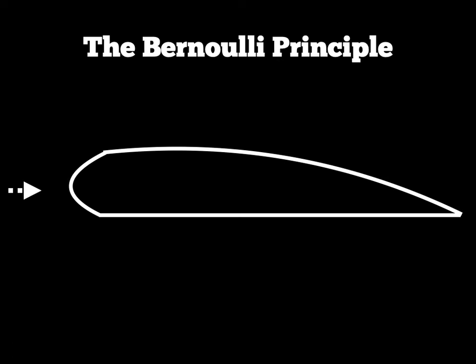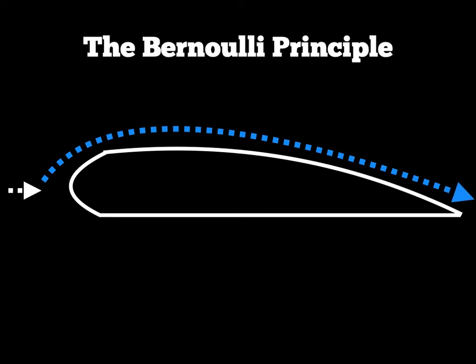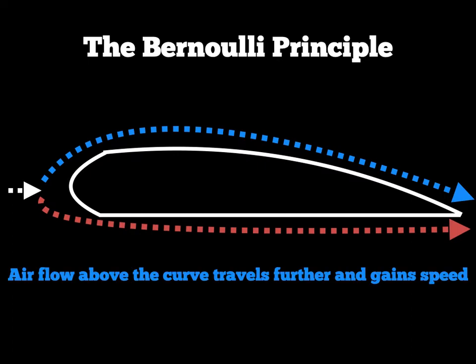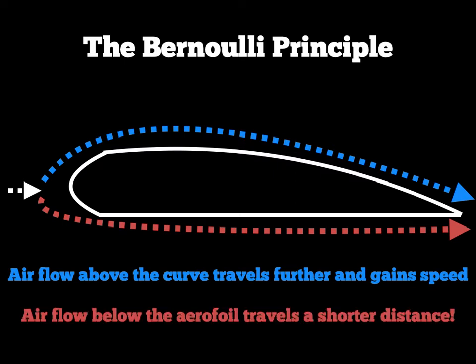As the air approaches the aerofoil, the air along the top has a longer distance to travel, and so it can generate more speed or air velocity — the velocity of that blue line is going faster. However, the air hitting the bottom has a shorter path, so the velocity is going to be lower than that on the top. Airflow above the curve travels further and gains speed, while airflow below the aerofoil on the straight path travels a shorter distance and therefore moves slower than the air on top.